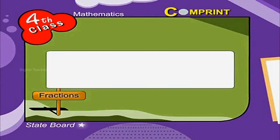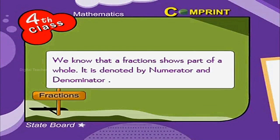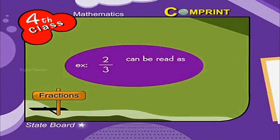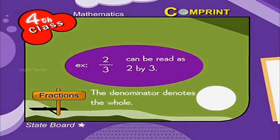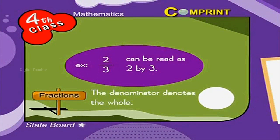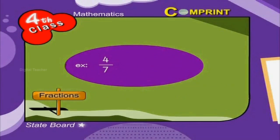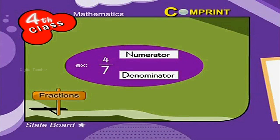Fractions. We know that a fraction shows part of a whole. It is denoted by a numerator and denominator. For example, this number can be read as 2 by 3. The numerator denotes the part of the whole, and the denominator denotes the whole. For example, in the number 4 by 7, 4 is the numerator and 7 is the denominator.